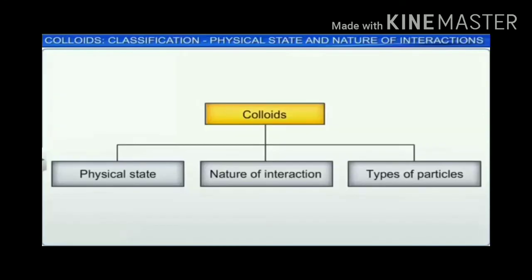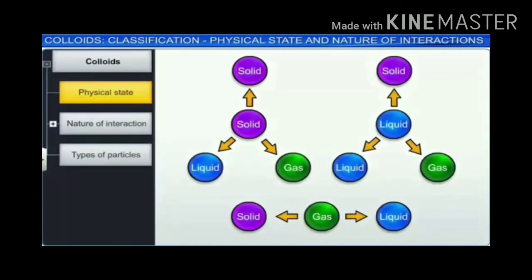Colloids can be classified on the basis of: the physical state of the dispersed phase and the dispersion medium; the nature of interaction between the dispersed phase and dispersion medium; and the type of particles of the dispersed phase. Let us first discuss the classification based on the physical state of the dispersed phase and the dispersion medium. Depending upon the physical state, eight types of colloidal systems are possible.